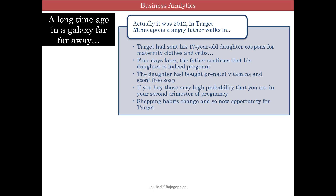Apparently, Target had sent his daughter coupons for maternity clothes and cribs. The manager profusely apologizes and the father walks away. Four days later, the manager calls the father to apologize again. On the phone, though, the father is embarrassed. He says it turns out he doesn't know what his daughter is doing — she is due in August.